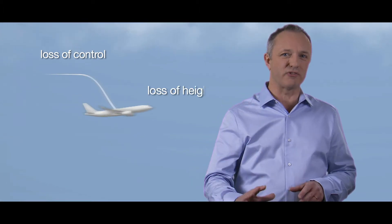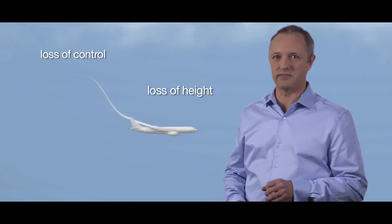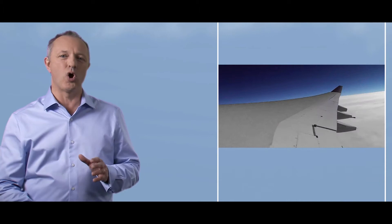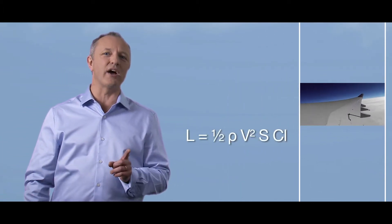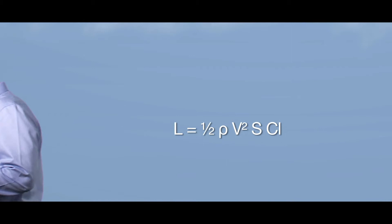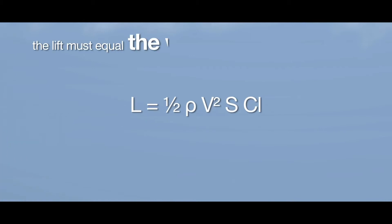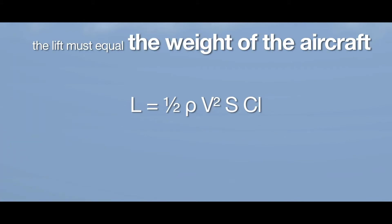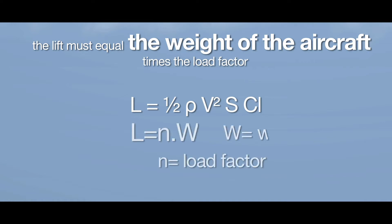A stall is characterised by a loss of control, then by a loss of height. A wing generates lift, where L equals a half rho V squared S CL. The lift must equal the weight of the aircraft times the load factor: L equals N times W, where N equals load factor and W equals weight.